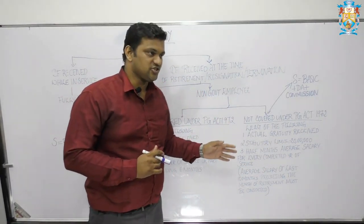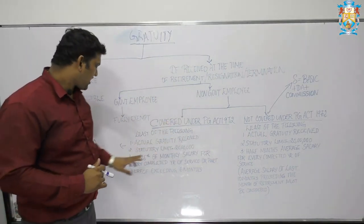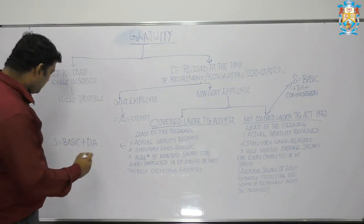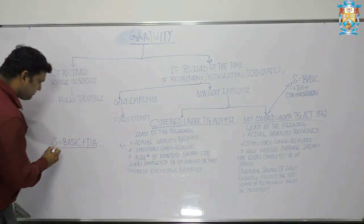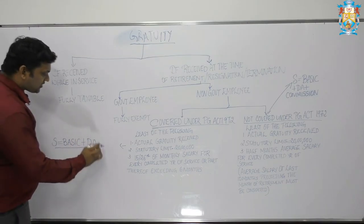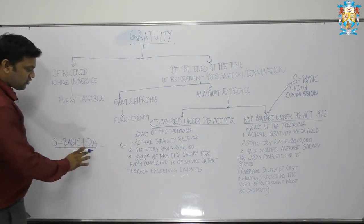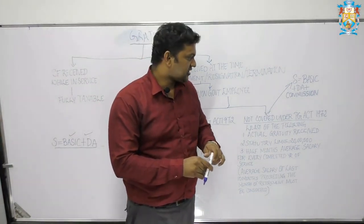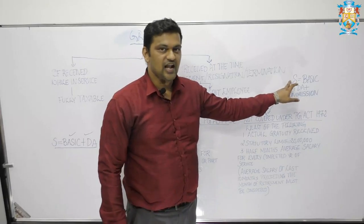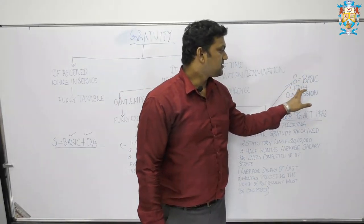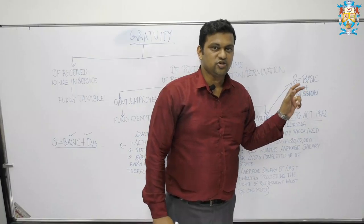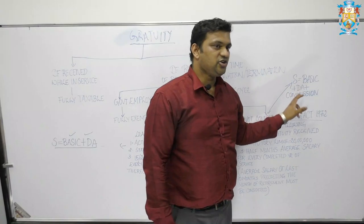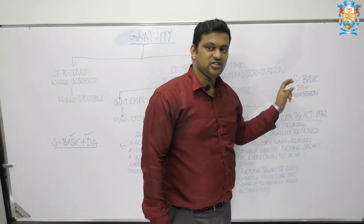For salary calculation, covered under the Payment of Gratuity Act, salary means basic plus DA — no other things will be considered. Whereas not covered under the Payment of Gratuity Act 1972, salary means basic plus DA, where DA should be considered for retirement benefit, plus commission at a fixed percentage of turnover.